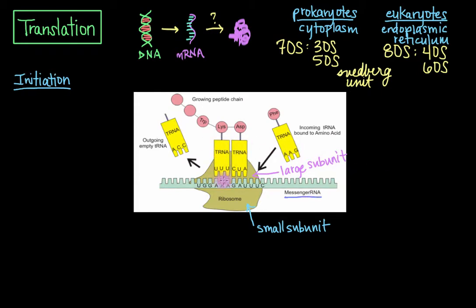It also includes the messenger RNA to be translated, a tRNA or transfer RNA with an aminoacyl group or amino acid attached, GTP as the major source of energy, as well as initiation factors, or IFs, which help the assembly of this whole initiation complex.